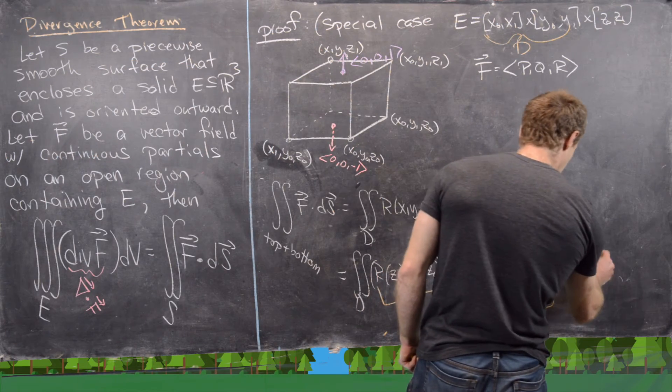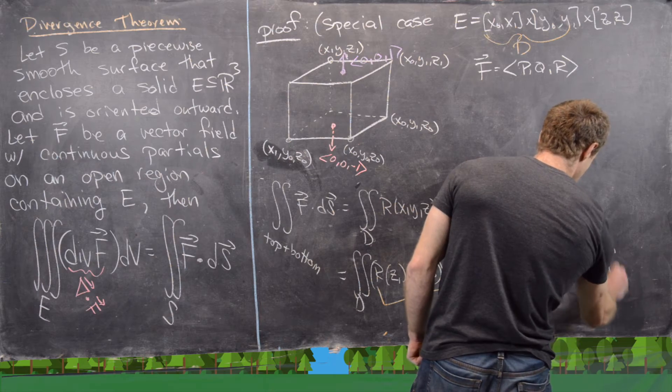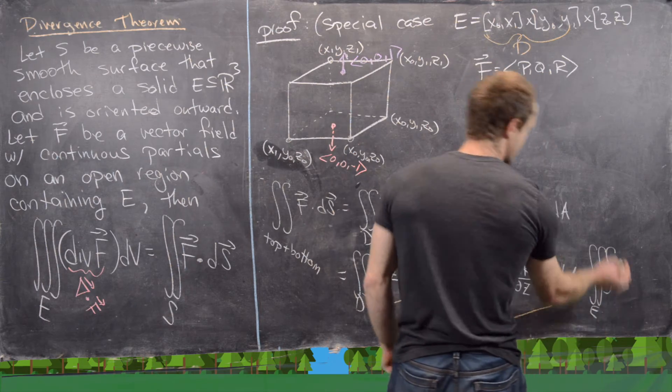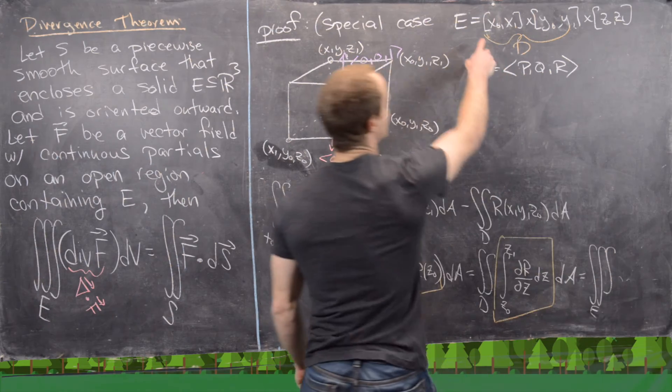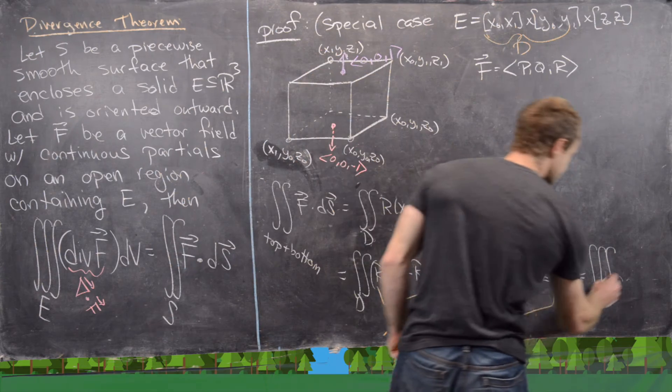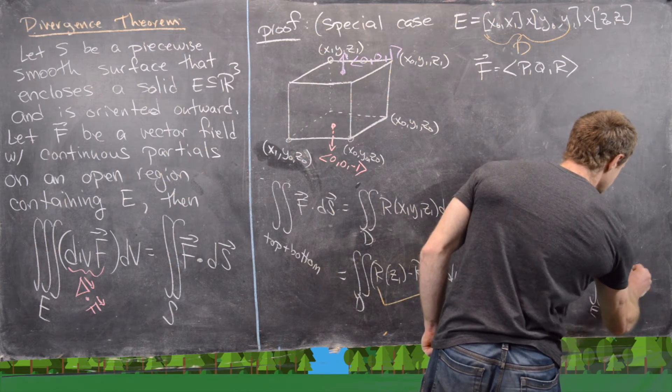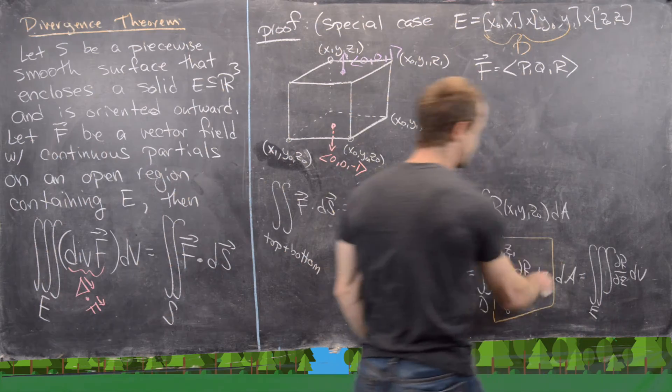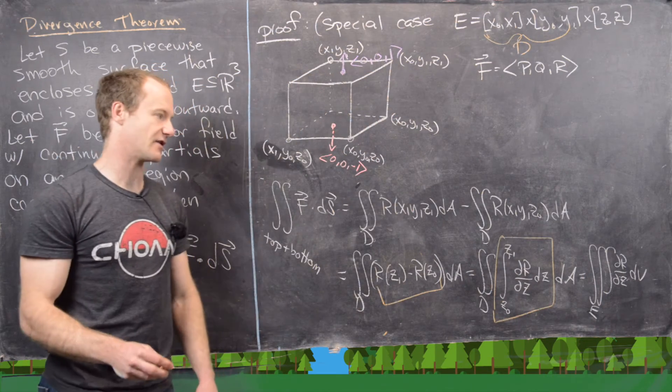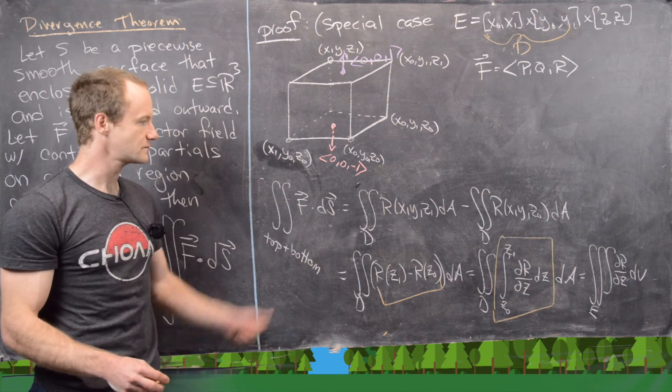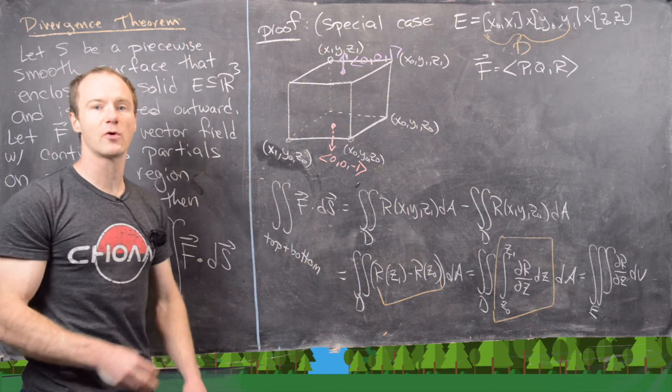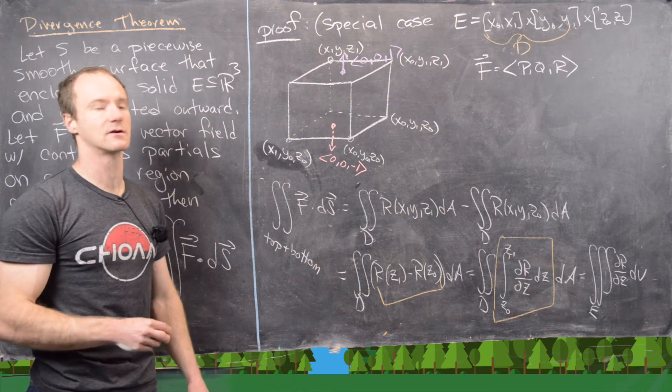Great. But now if we look, if we add this interval in the z-axis to this region D, we get exactly what we're kind of working towards, which is the triple integral over E, over E because that's what we've called our box, of ∂r/∂z dV, because the dz and the dA combined together to give us a dV. So I'll clean up the board and then we will write down the final kind of calculation.